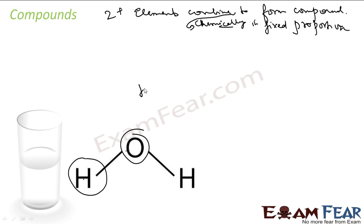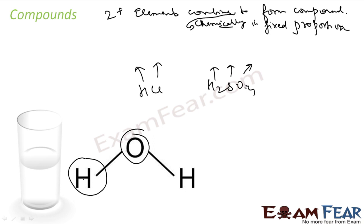For example, Hydrogen and Oxygen are two elements combined to form Water, combined chemically in a fixed proportion. Two or more elements combine chemically in a fixed proportion to form a Compound. For example, HCl — Hydrochloric Acid — has one molecule of Hydrogen and one molecule of Chlorine. H2SO4 — Sulphuric Acid — has two molecules of Hydrogen, one Sulphur, and four Oxygen. Carbon Dioxide has one molecule of Carbon and two molecules of Oxygen. All these are examples of Compounds; the easiest example is Water.